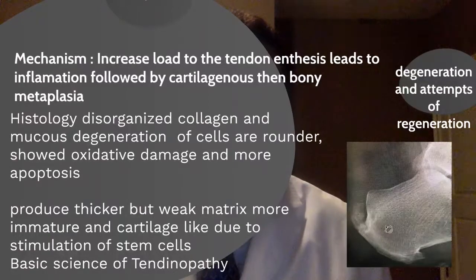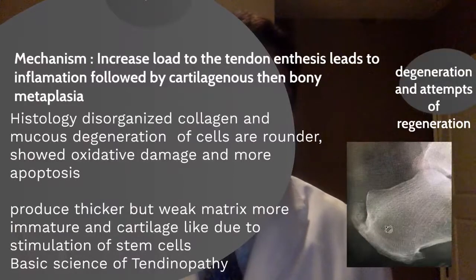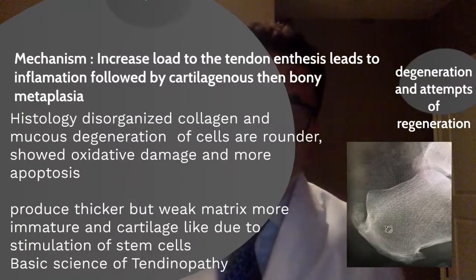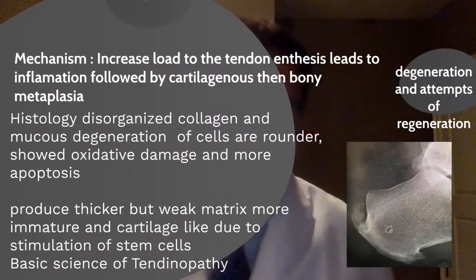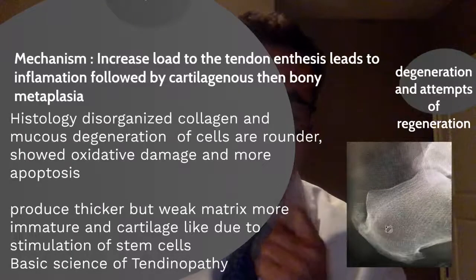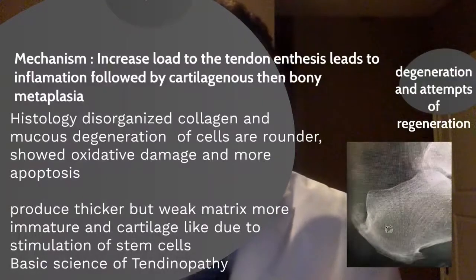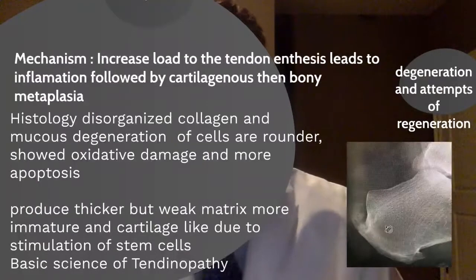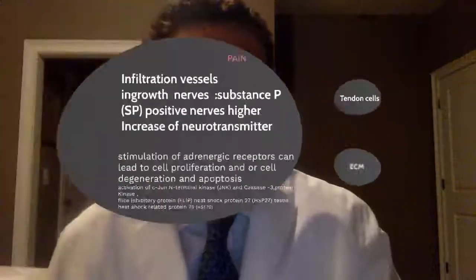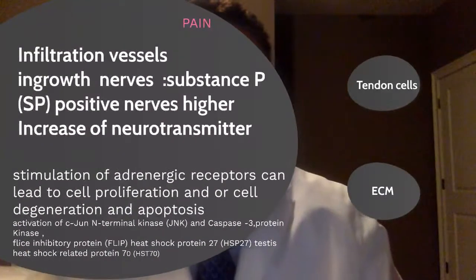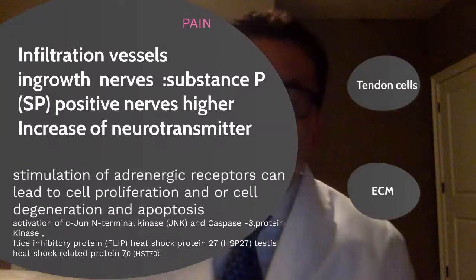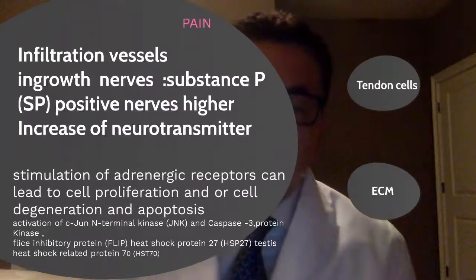The histology shows disorganized collagen, mucoid degeneration, cells that become rounder and show oxidative damage and more apoptosis. They also produce thicker but weaker matrix, more immature and cartilaginous-like, due to stimulation of stem cells. This is the final consequence: tendinopathy.